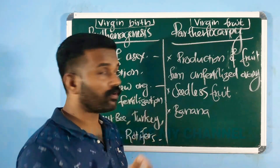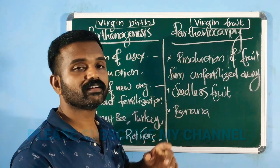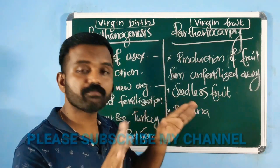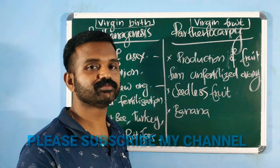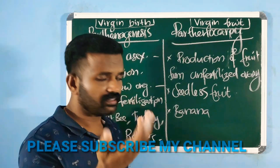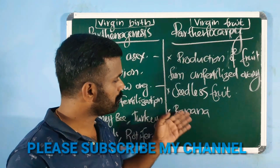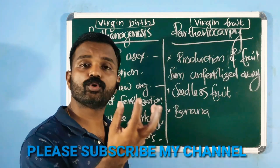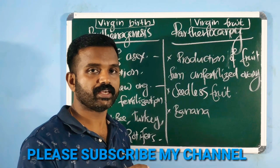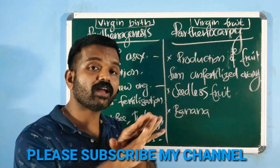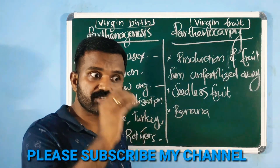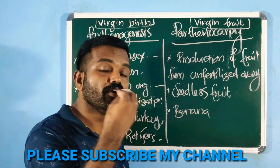The fruit formed in Parthenocarpy is actually a seedless fruit — it will never reproduce. A typical example is banana. Banana is a natural Parthenocarpy fruit. So Parthenocarpy is not a process of reproduction; it is just a process of fruit formation — formation of seedless fruit.